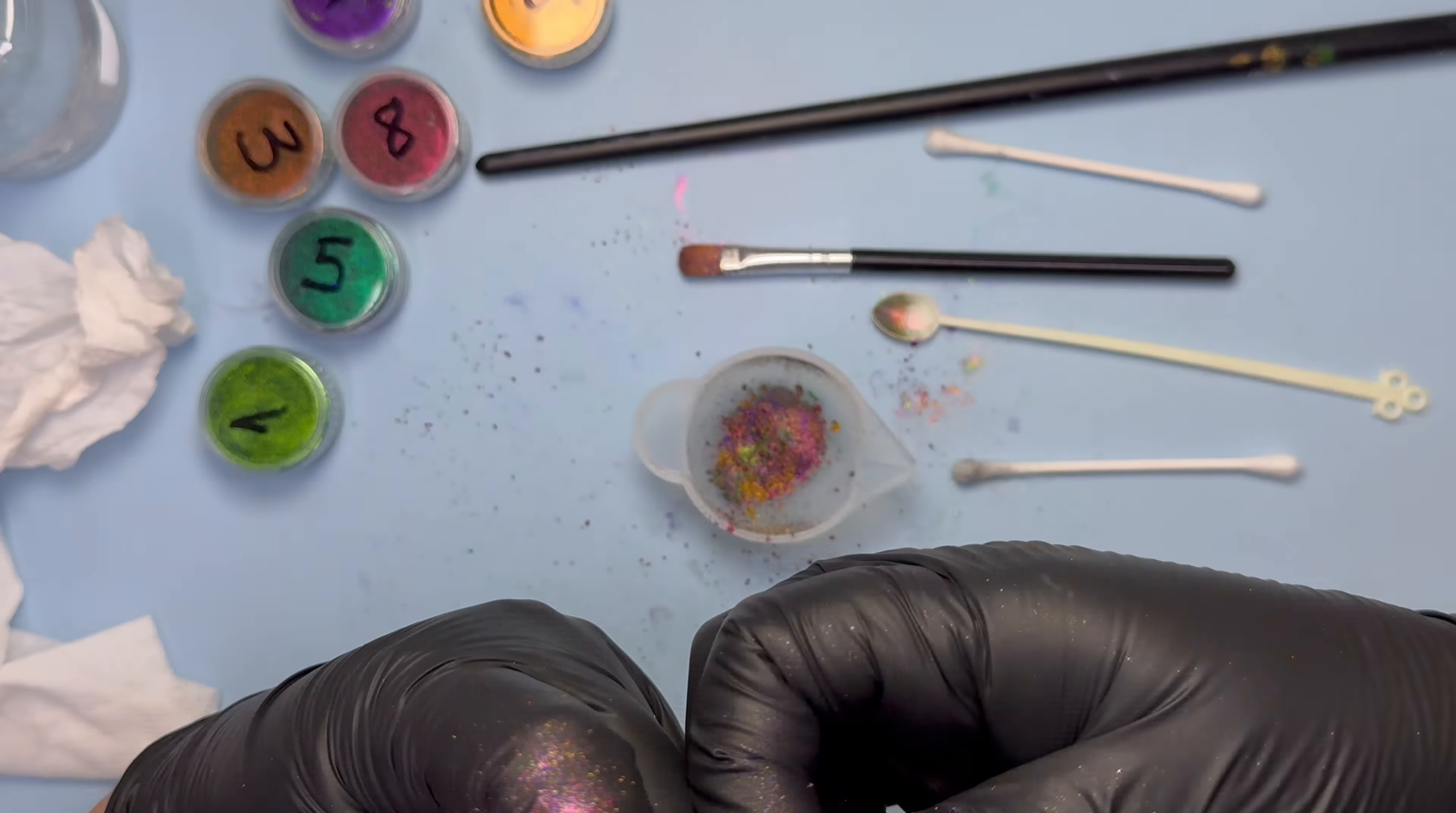For the resin, I'll be using Let's Resin black epoxy, which is one-to-one by volume. This mold needs 120 ml, therefore 60 ml of A and 60 ml of B.